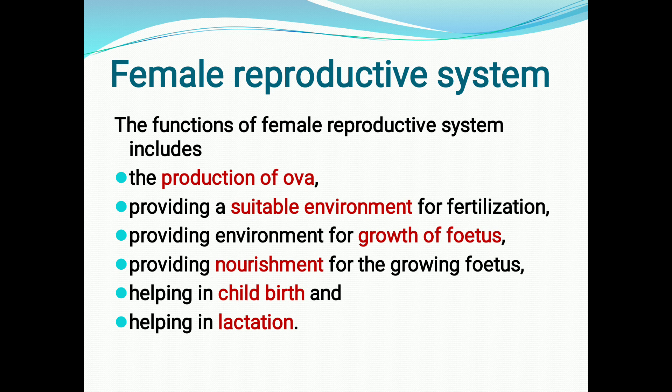The female reproductive system provides nourishment for the growing fetus, especially through the umbilical cord, which gets its nourishment from the mother. It also assists in childbirth and delivery, and helps in lactation — feeding the baby after delivery.